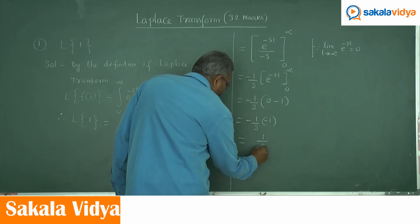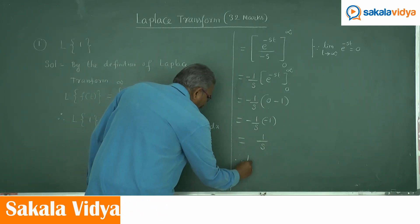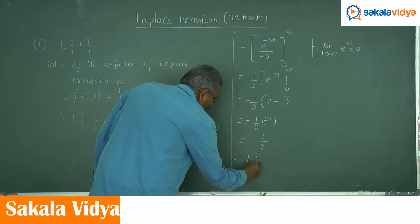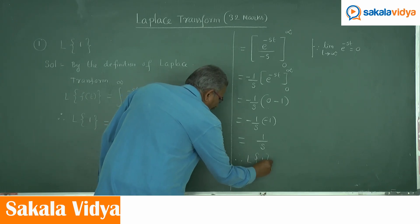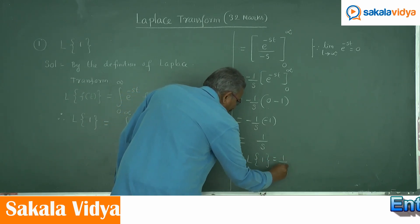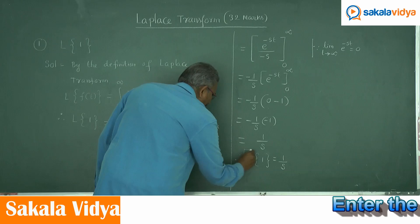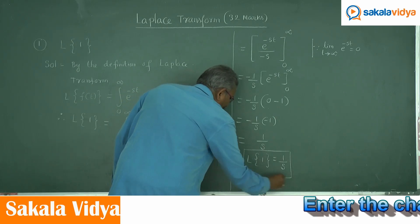Therefore, minus 1 by s multiplied by minus 1 equals 1 by s. So the Laplace Transform of 1 equals 1 by s. This result has been derived.